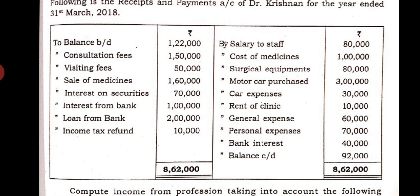The first step is to identify professional income. For a doctor, we consider consultation fees, visiting fees, and sale of medicines — these are normal professional-related income. But interest on securities, interest from bank, loan from bank, and income tax refund are not related to his profession. So we add only consultation fees, visiting fees, and sale of medicines.